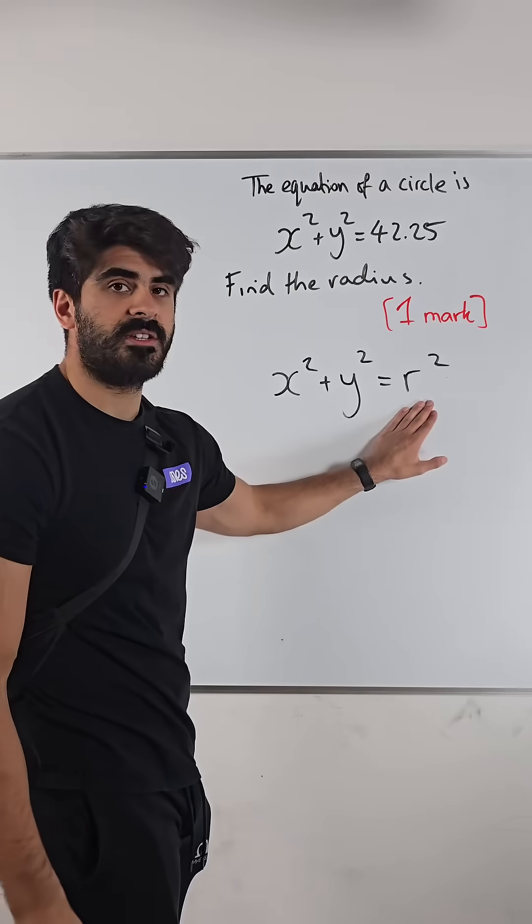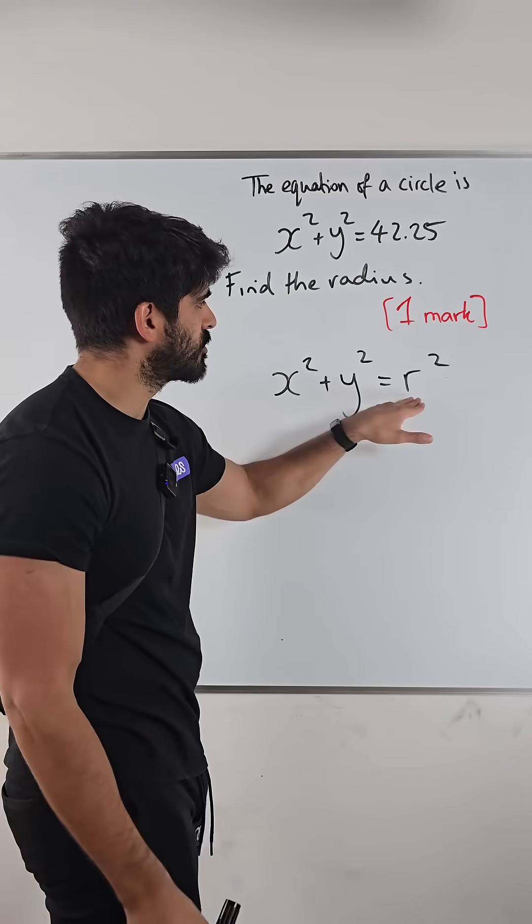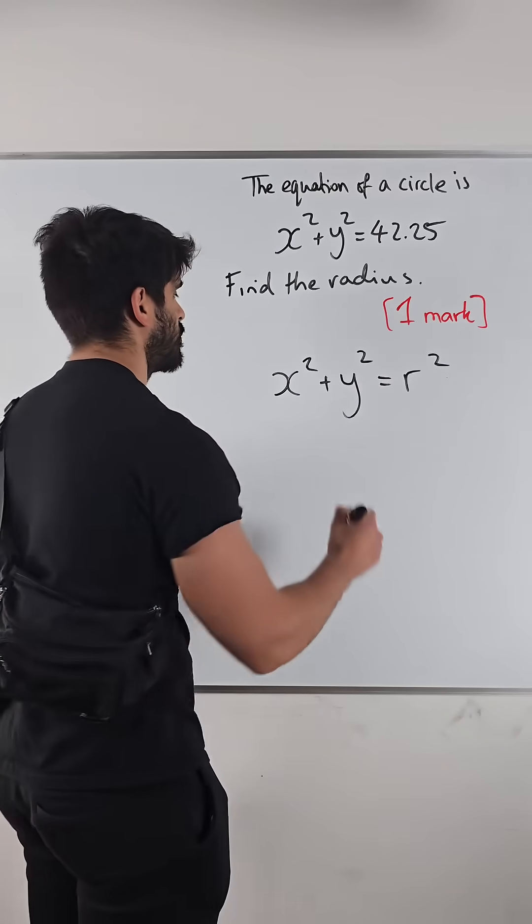But we're just focusing on the radius. So this thing equals the radius squared. The radius squared equals 42.25.